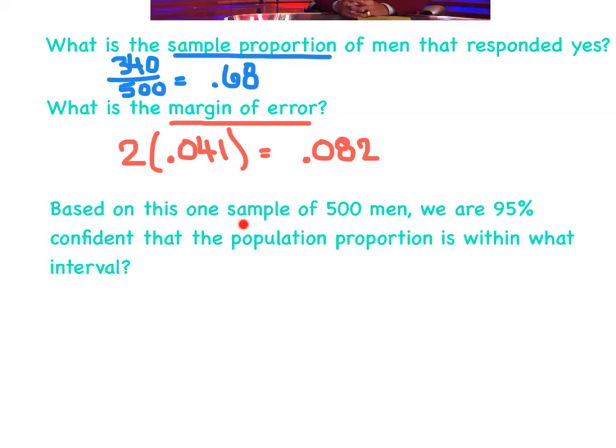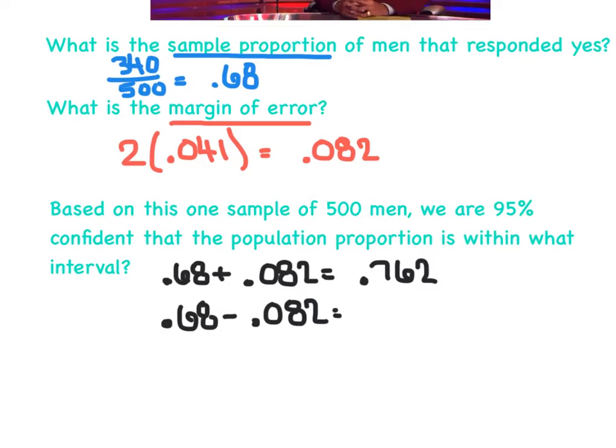Based on this one sample of 500 men, we're 95% confident that the population proportion is within what interval. I'm going to take my proportion of 0.68 and add my margin of error, which gives me 0.762. Then I'm going to take my proportion and subtract the margin of error to get a lower limit of 0.598. We're 95% sure that the population's proportion falls somewhere between 59.8% and 76.2%, and more than likely it's really close to 68%.